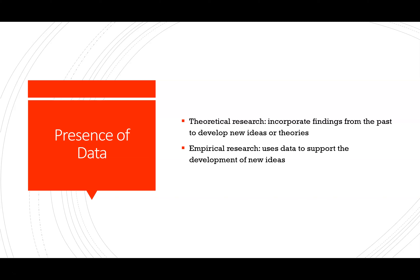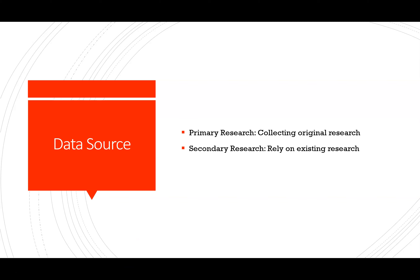We also have to consider what kind of data we have. Theoretical data uses findings from existing studies to develop new ideas or theories. Empirical research uses data we collect ourselves to generate new ideas that haven't been done before. For data sources: primary data is original research we collect ourselves, while secondary data is already out there — for instance, a dissertation using the IPEDS database, where colleges deposit their data, requiring only that you compile and report it.